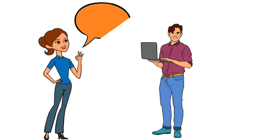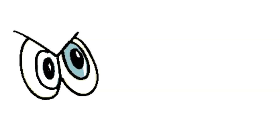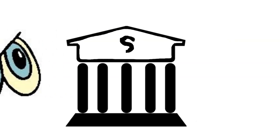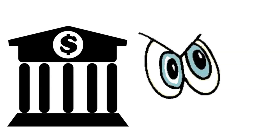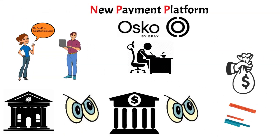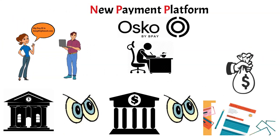First, the payment recipient provides their registered PayID to the payer. That person then makes an NPP payment via their bank. The payer's bank looks up the PayID to see what bank it belongs to and processes the payment to that bank. The recipient's bank looks up the PayID to find the recipient's BSB and account number, and deposits the payment to the recipient's account. It's fast, convenient and doesn't expose the recipient's account details to the payer.